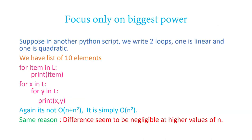Similarly, suppose you have two loops in a program — the first loop is linear, Big O of N, and the second loop is quadratic, Big O of N squared. What is the time complexity of this program? You might say Big O of N plus N squared. No need for that — just state the biggest power: Big O of N squared. Again, the same reason: the difference seems negligible at higher values of N, so it's better to consider only the highest power.